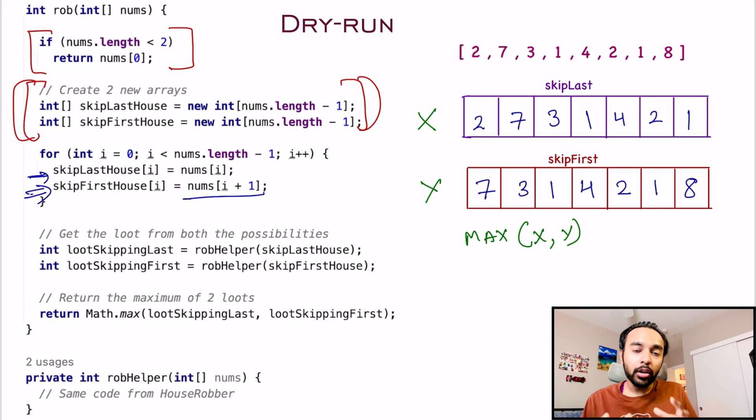Since this solution is based a lot on the original problem house robber 1, the time complexity of this solution will also be order of n, and the space complexity will also be order of n.